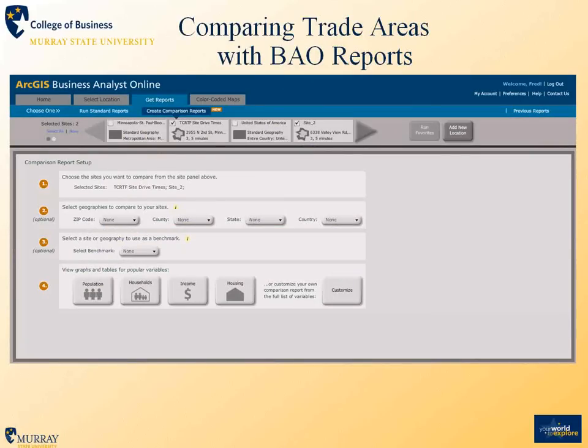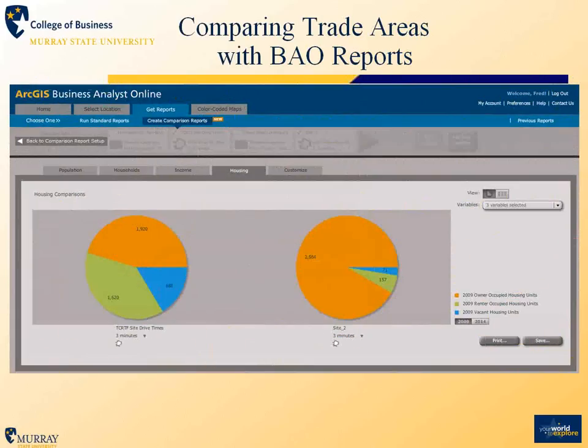Once those trade areas are in place, you can compare them and their characteristics using a variety of tools with Business Analyst reports. The first is the comparison report, in which you can determine a customized set of attributes to compare the two sites, doing so both graphically and in tables. This one illustrates housing characteristics to show different patterns of home ownership between the two sites, but there are a variety of other options available as you move through the comparison reports process.